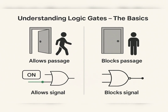Now let's understand the basic purpose of a gate. Consider an open door and a closed door. In the case of the open door, you are allowed to pass through. But in the case of the closed door, you are not allowed. Similarly, logic gates either allow or do not allow electrical signals to pass through. A logic gate that allows electrical signals is in an on state; when it blocks signals, it is off.